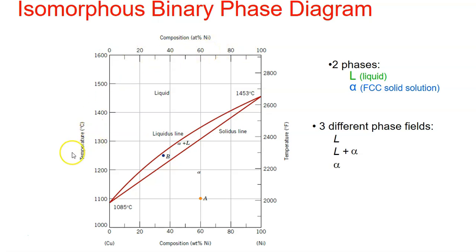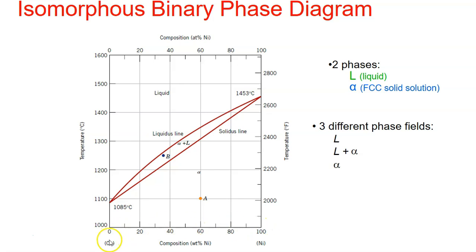The temperature can be provided in either degrees Celsius or degrees Fahrenheit. The composition ranges from zero weight percent nickel on the left to 100 weight percent nickel on the right. For copper, it goes from right to left — zero percent copper on the right and 100 percent copper on the left.